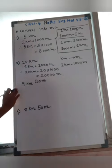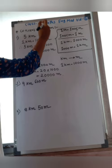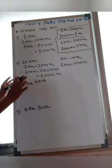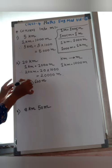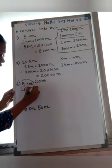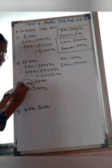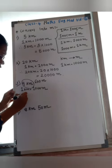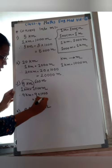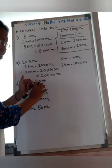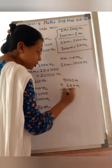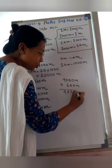Here, we are converting kilometer into meter and the question gives 9 kilometer and 600 meter. First, convert 9 kilometer into meter: 1 kilometer equals 1,000 meter, so 9 kilometer equals 9 into 1,000 — that is 9,000 meter. The 600 is already in meter, so add: 9,000 plus 600 — the answer is 9,600 meter.